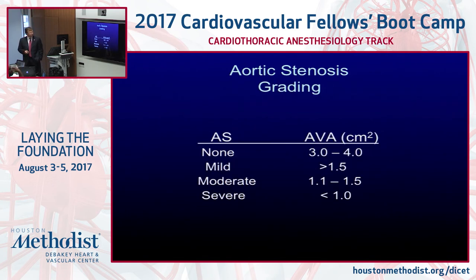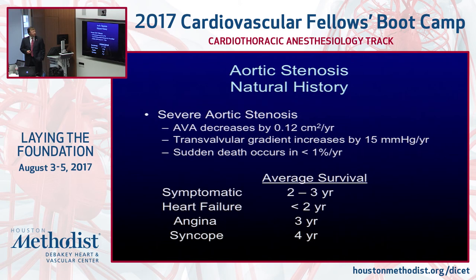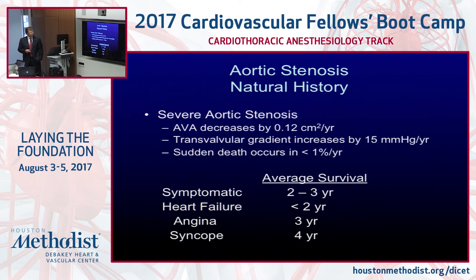The grading scale: an aortic valve area less than 1 cm² is considered severe. The natural history shows a predictable decrease in aortic valve area of about 0.12 cm² per year, with transvalvular gradient increasing about 15 mmHg per year. By the time you have severe AS with symptoms, average survival is about two to three years. With heart failure it's less than two years — the natural history of AS is more aggressive than AI.